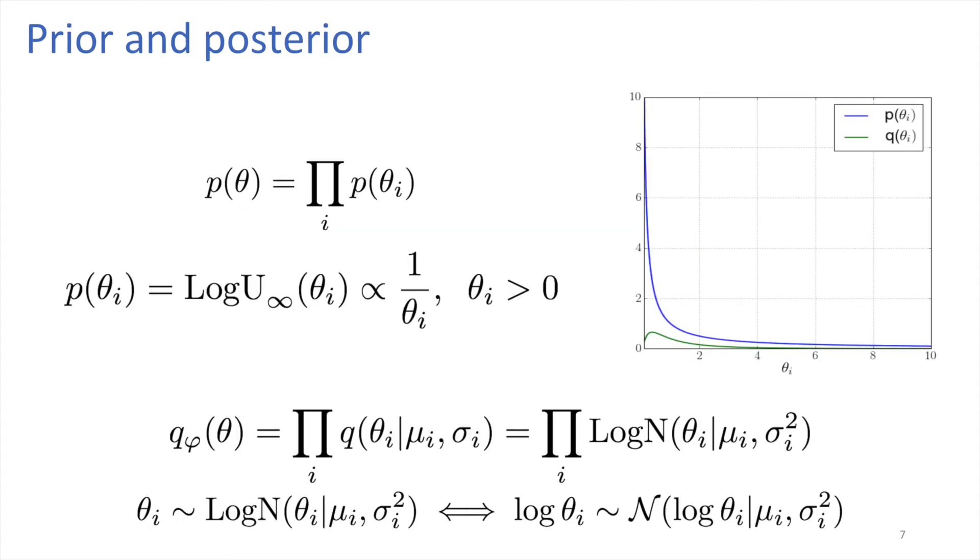We have chosen the log-uniform distribution as our prior for its sparsity-inducing properties. As we have positive θ, the log-normal distribution is a natural choice for approximation of its posterior distribution.